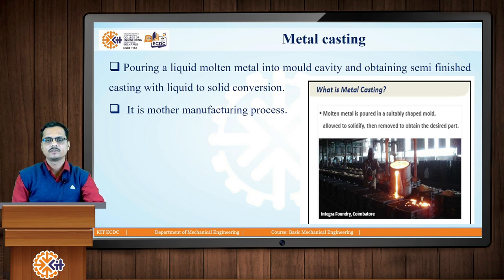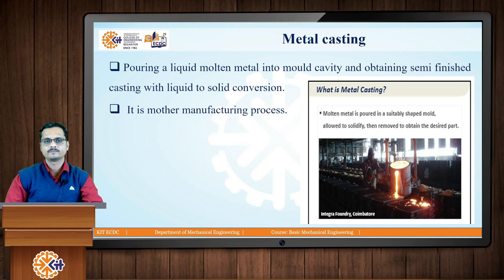Now friends, metal casting is the mother manufacturing process. It is the oldest near-net-shape manufacturing process, and by birth all of us are casters. Metal casting is the manufacturing process which deals with pouring of liquid molten metal into a mould cavity and obtaining a semi-finished casting with the help of liquid-to-solid conversion.